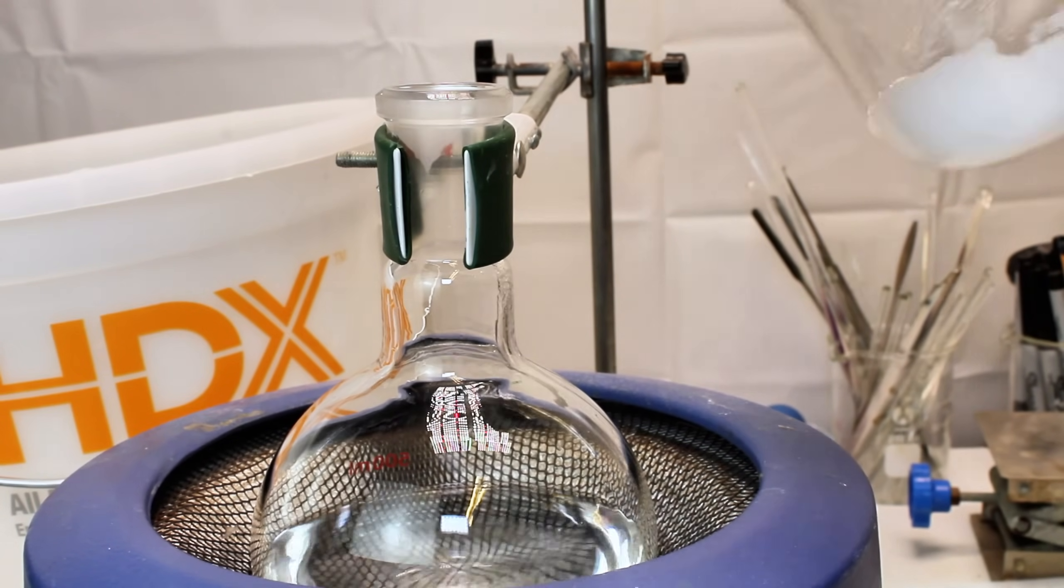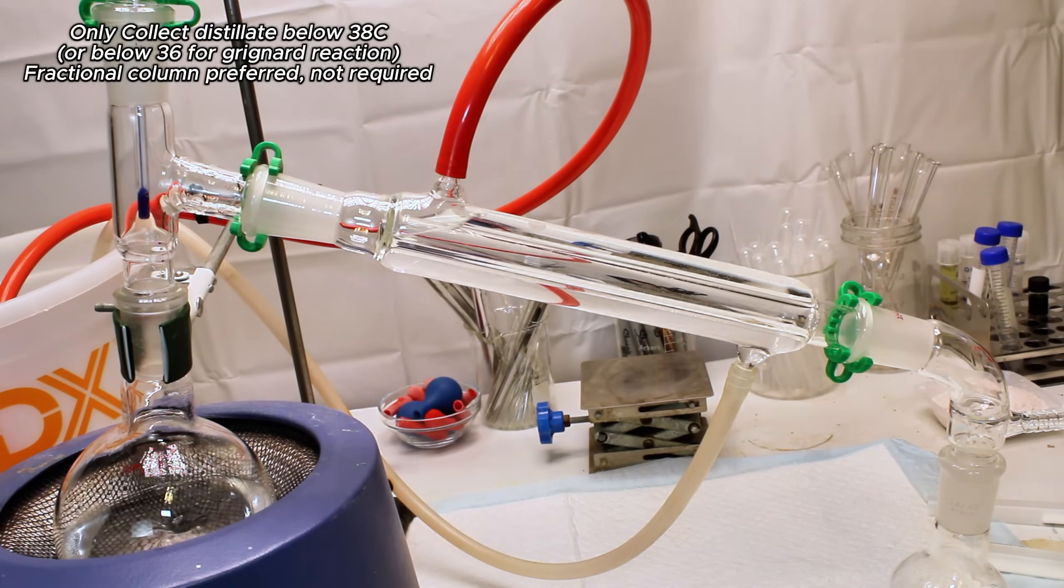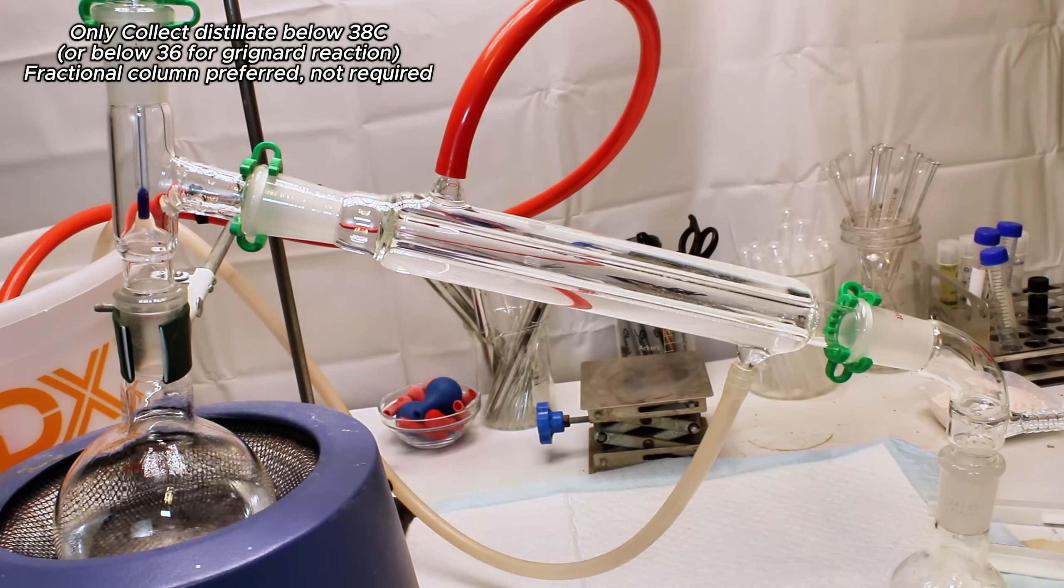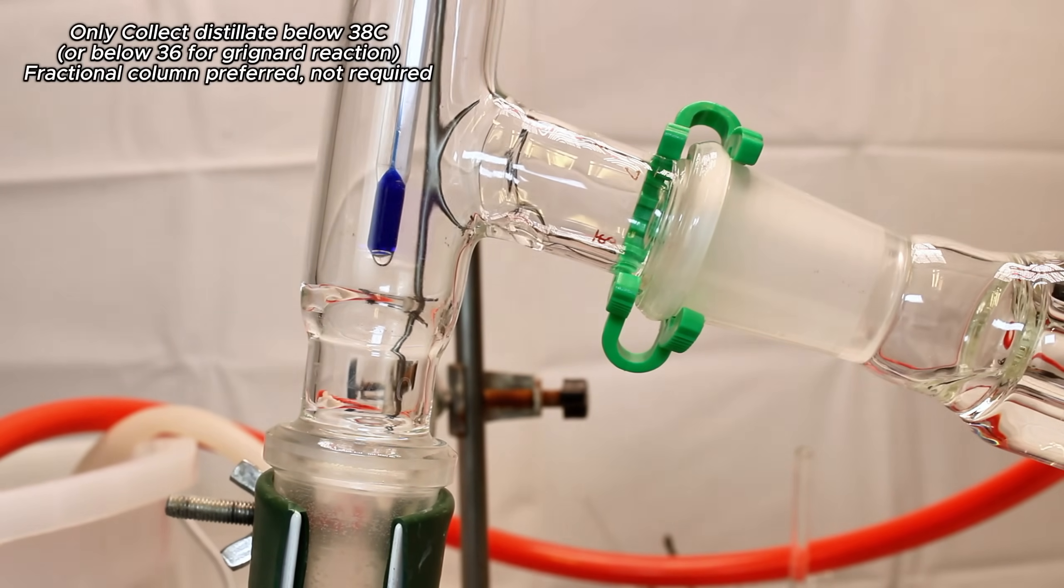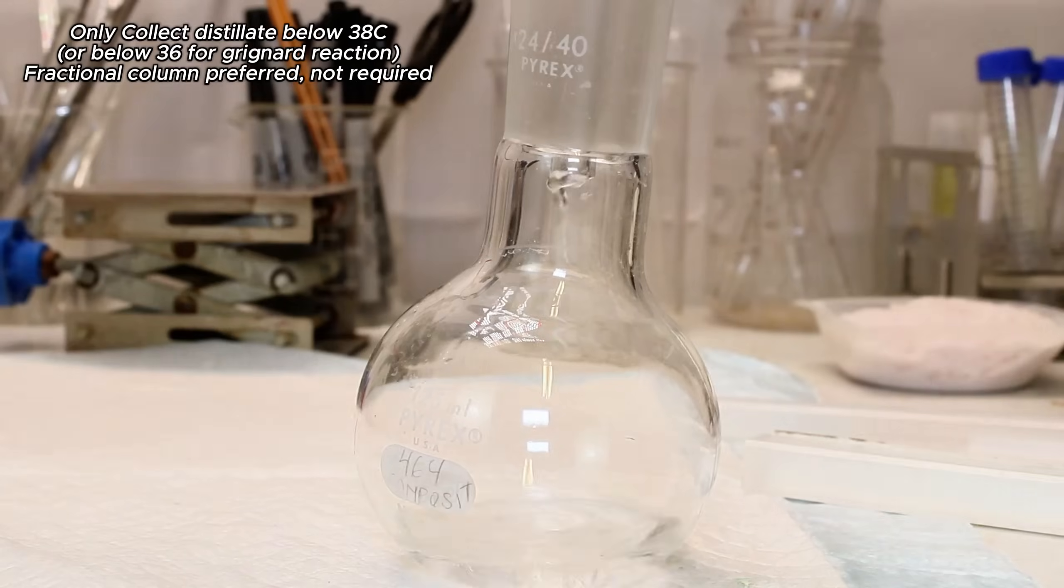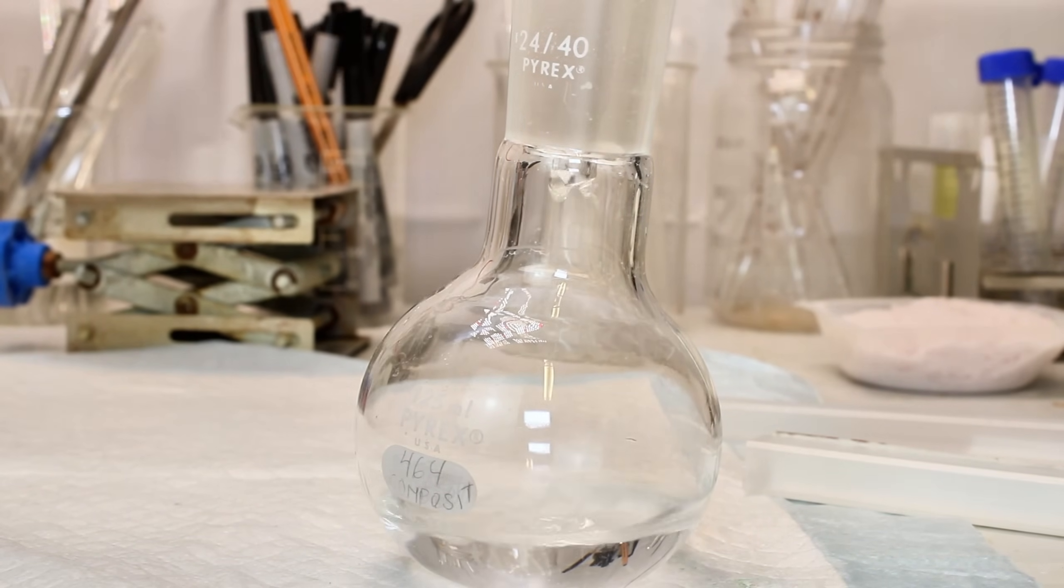In this step, I only want to collect anything that distills over below 38 degrees celsius, and this should be very pure diethyl ether. Keep in mind if you want to make ether for a Grignard reaction, you only want to collect distillate below 36 degrees celsius, and you also would probably want to use a fractional distillation column to eliminate alcohol completely.